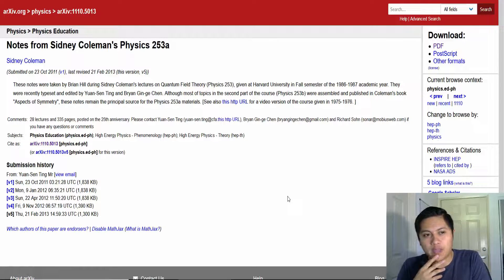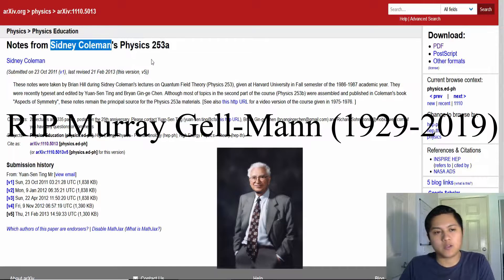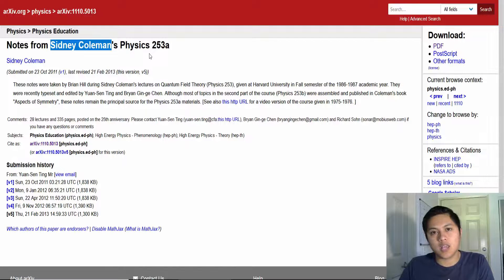I thought it might be cool to react to these notes from Sidney Coleman. For those of you who don't know, Sidney Coleman was a PhD student of Murray Gell-Mann, who was a physicist at Caltech, who recently passed away. Rest in peace, Murray Gell-Mann. He came up with the term quark, and he worked on a lot of different things in particle physics and won the Nobel Prize in physics in 1969. So he's a big deal.